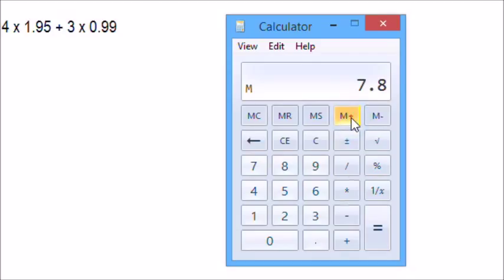Then we'll do the 3 times 0.99 equals, and we'll add this result to memory. Hitting memory recall, we'll get our sum of 10.77.